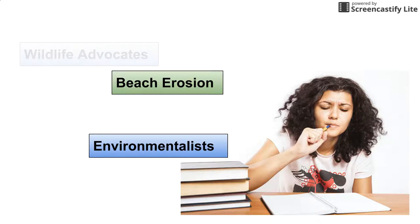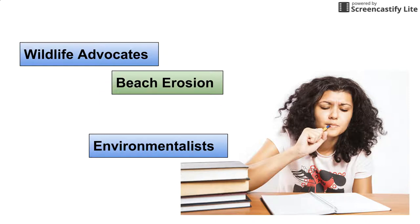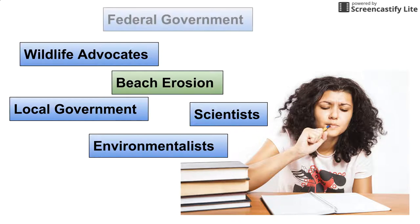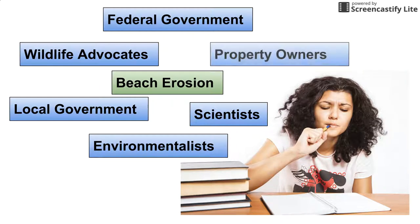Environmentalists and wildlife activists are concerned about beach erosion because they don't want animals who use the beach to suffer if it disappears. Scientists are generally concerned about the world and the way it works. Local government certainly doesn't want that beach to disappear because it's a great tourist attraction. The federal government has all kinds of regulations and environmental protections in place, so we know they're interested in this topic. And property owners, because if you live on the beach you don't want it to go anywhere. You love it and you use it.